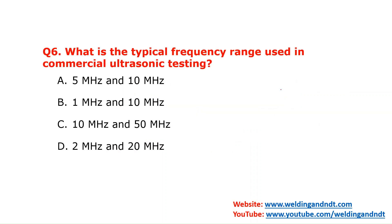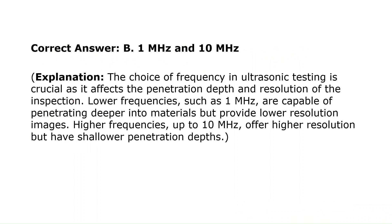Question number 6: what is the typical frequency range used in commercial UT? The most commonly used frequency range in ultrasonic testing is 1 megahertz to 10 megahertz — so option B is the correct answer. The choice of frequency affects penetration depth and resolution: lower frequency achieves deeper penetration but lower resolution, whereas higher frequency like 10 megahertz achieves higher resolution but shallower penetration.